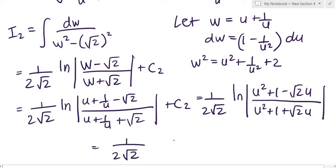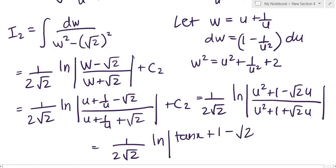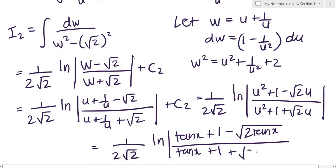So that is finally I₂ = (1/(2√2)) · ln|(tan(x) + 1 − √(2 tan(x))) / (tan(x) + 1 + √(2 tan(x)))| + c₂.